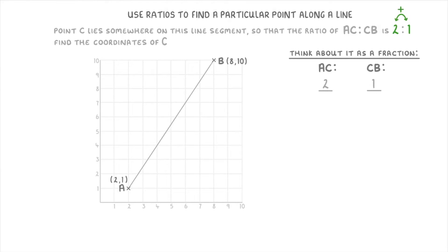And then put the sum of both of them as the denominator. So because 2 plus 1 is 3, we put 3 on the bottom, to give us 2 thirds and 1 third. This means that point C should be somewhere around here. So that from A to C is 2 thirds of the entire line segment, and from C to B is just 1 third of the line segment.